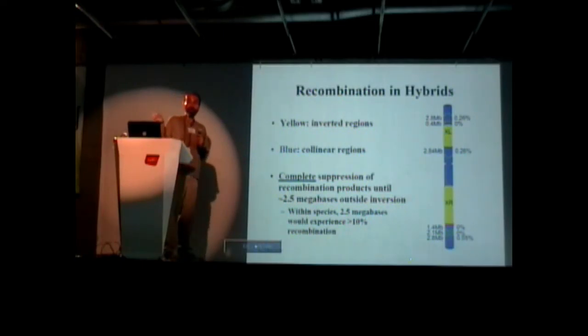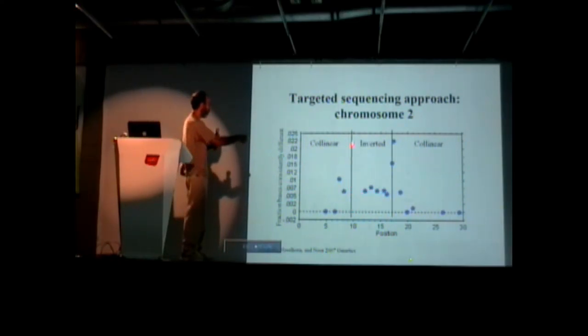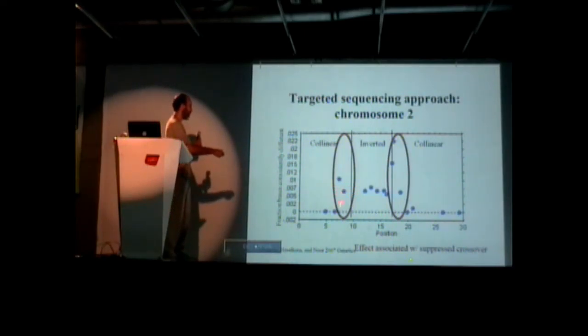So if this is true, if it's a recombination effect that prevents gene exchange, we should expect to be able to go to 2.5 million bases outside the inversion and still see high divergence, and then it goes down. That's what we predicted. And in fact, that's exactly what we see. The inversion starts here at position about 9.5 million. You go to about position 7 million, and then it goes down. So that is exactly what you expect to see.